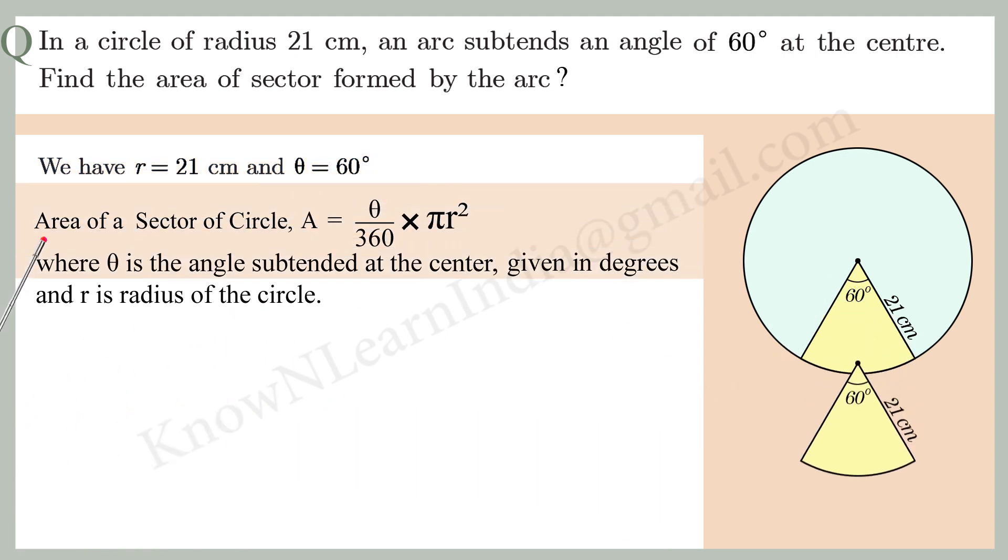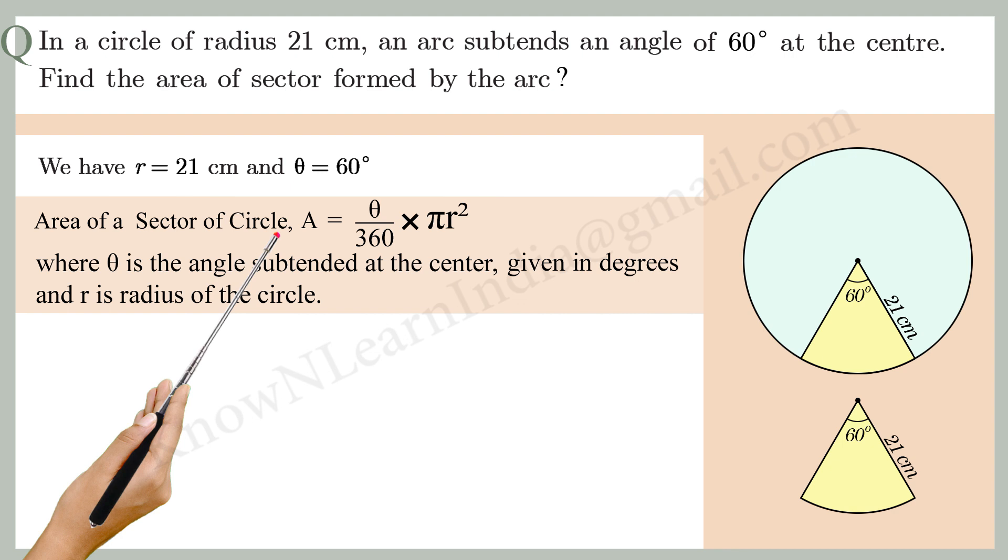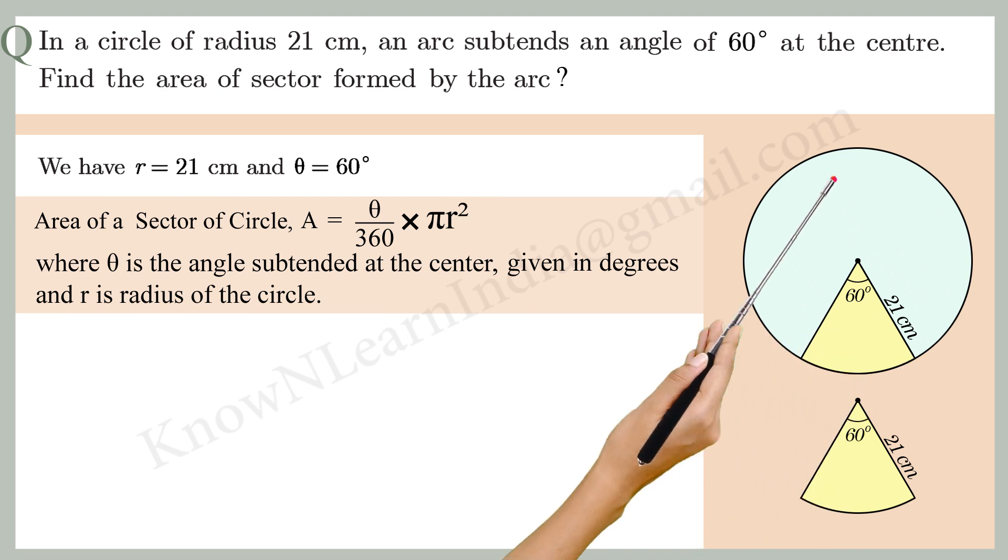We know that area of sector of a circle A is equal to theta by 360 into pi r square, where theta is the angle subtended at the center given in degrees and r is the radius of the circle.